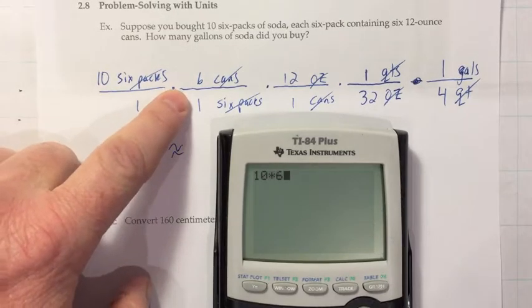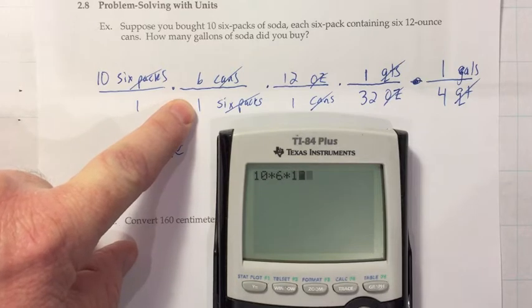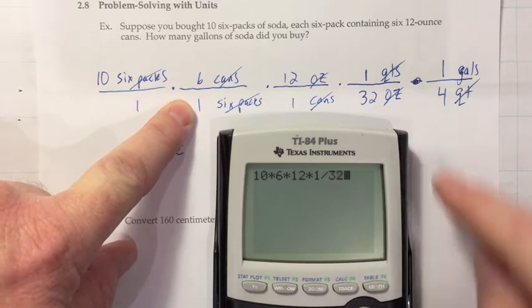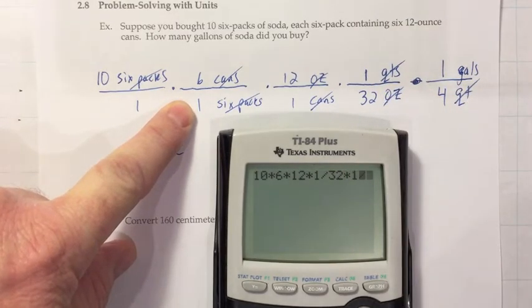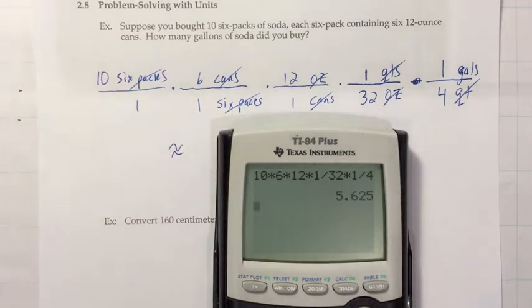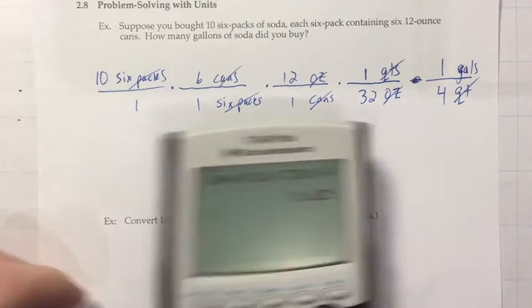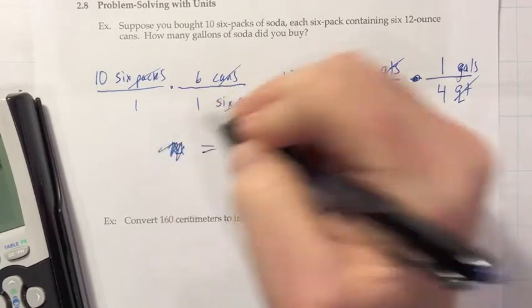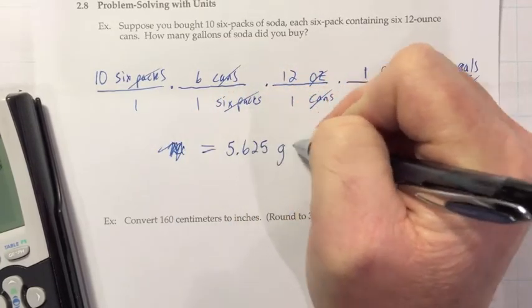It would be to enter it into your calculator. Start on the left and just go left to right. So ten times six, you don't need to do the over one, that wouldn't change anything. Times twelve. Times one over thirty-two. If you don't put the one here you're forgetting to divide, so that's important. And then times one-fourth. And that should be the conversion to gallons. They didn't tell us what to round it to, and it's actually exact at three decimals. So I'm just going to get rid of that approximately equal, go with a regular equal sign.